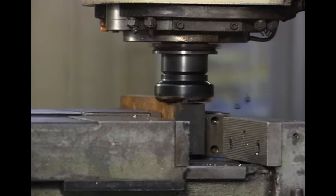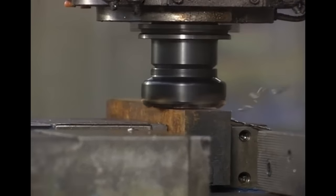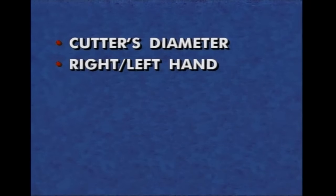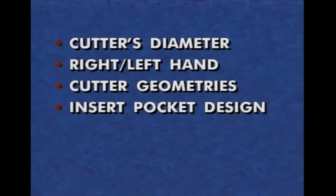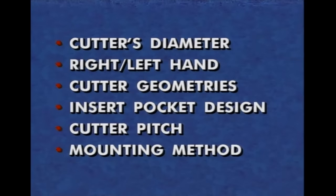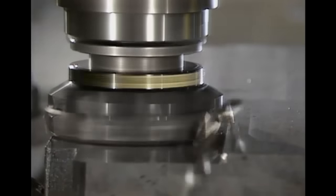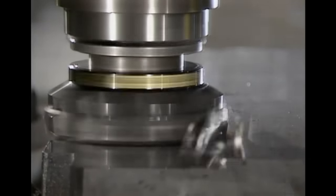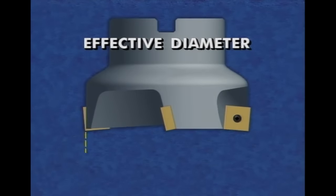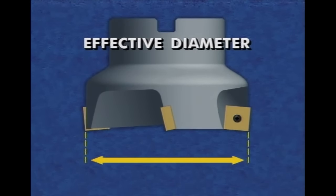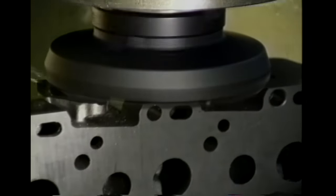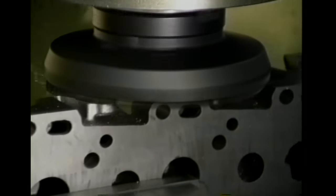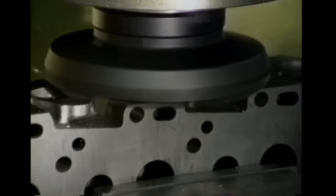There are major variables in the design of face milling cutter bodies, including the cutter's diameter, the hand of cut, the cutter geometries including rake and lead angles, the insert pocket design, the milling cutter pitch, and the cutter's mounting method. The effective diameter — measured from the highest point on an insert on one side to the highest point on the insert on the opposite side — is the most significant concern. For proper positioning, the face milling cutter's effective diameter should be about one and a half times the width of the cut desired, allowing a quarter to one third of the cutter to overhang the edges of the workpiece for optimal chip formation.